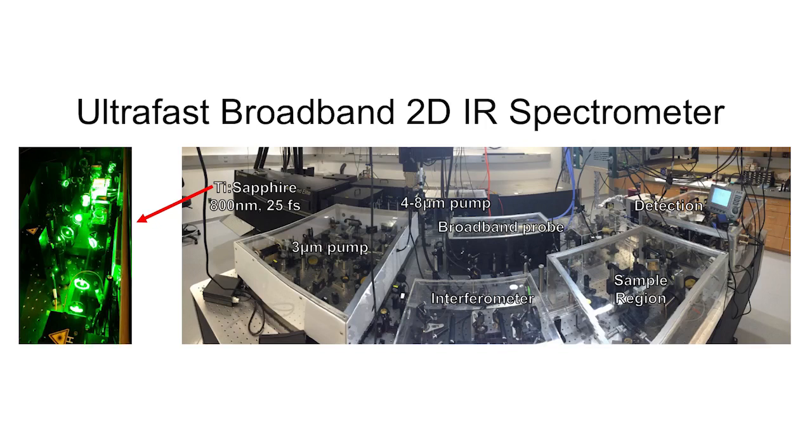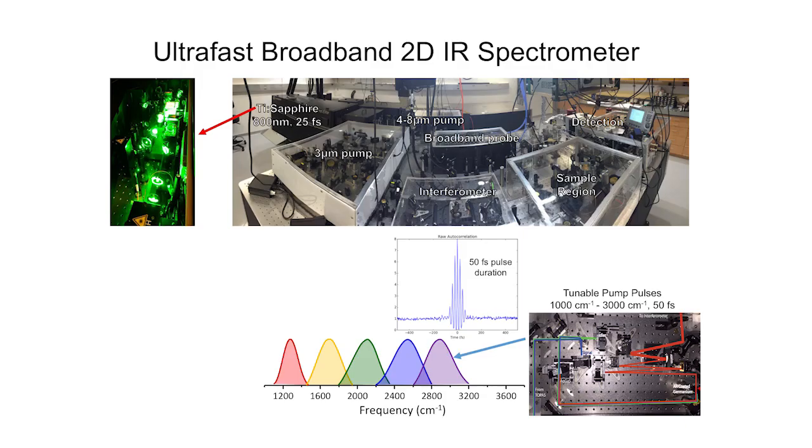Here is a picture of the ultrafast broadband two-dimensional infrared spectrometer from the Tokmakov lab at UChicago. Starting with an ultrafast Ti-Sapphire laser, we generate infrared light using various home-built optical systems. In one of these systems, we generate powerful pump pulses tunable throughout the mid-infrared region. We used this system to initially excite vibrations in the system we're studying.